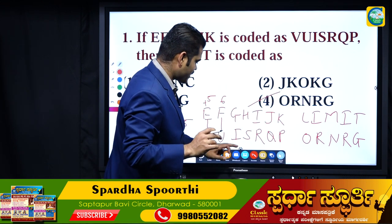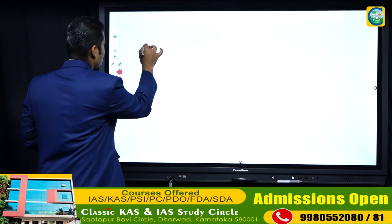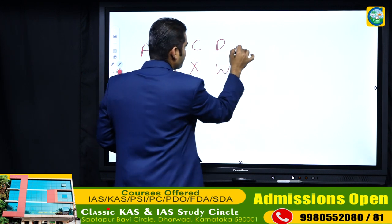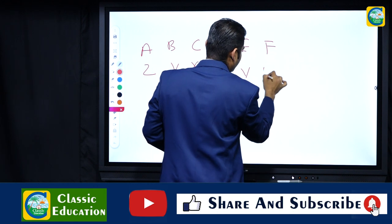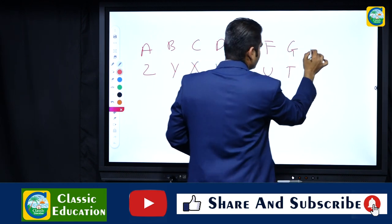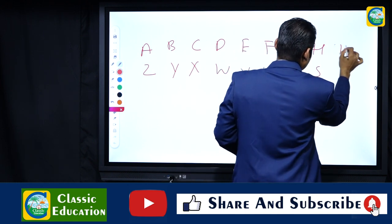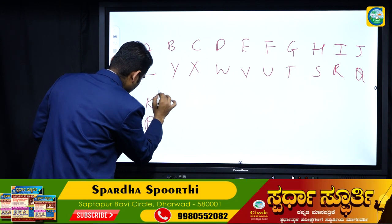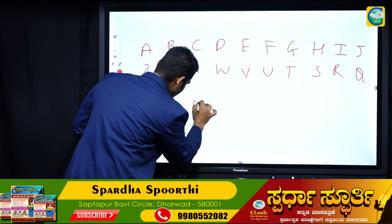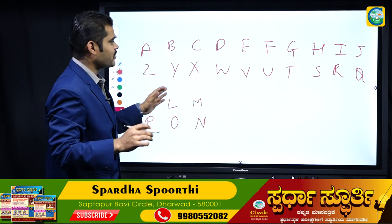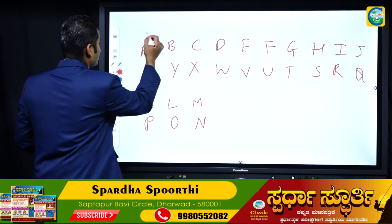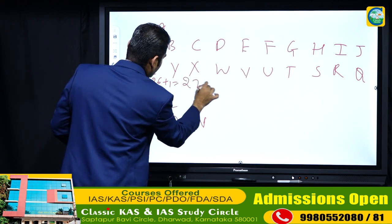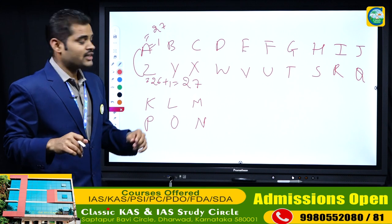You get the opposite words using this pairing method. The opposite pairs in the English alphabet are: A-Z, B-Y, C-X, D-W, E-V, F-U, G-T, H-S, I-R, J-Q, K-P, L-O, M-N. These are all the opposite word pairs in English alphabets.